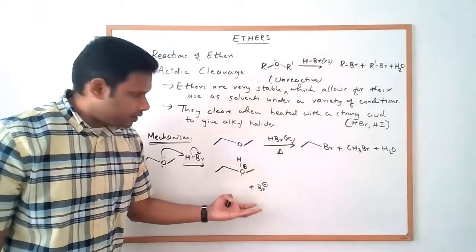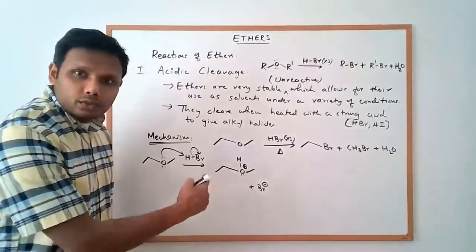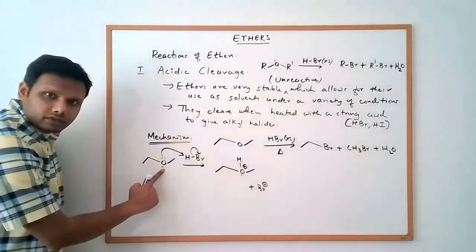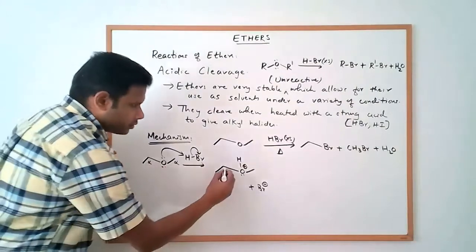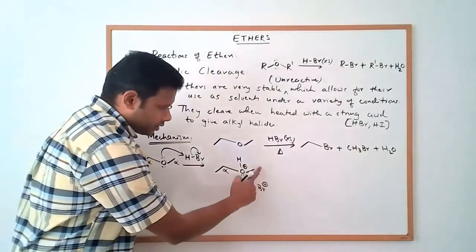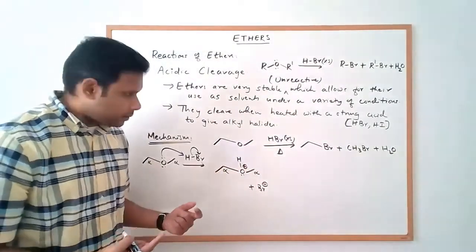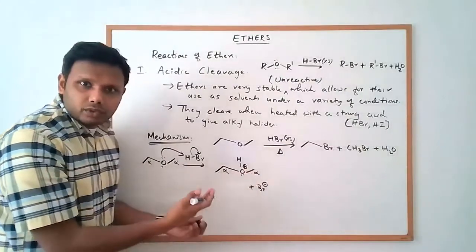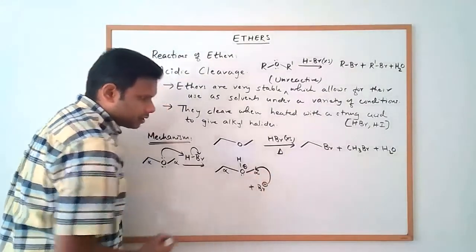This protonated ether now looks like an alcohol, so that oxygen is a good leaving group. The Br minus can go and do an SN2 on one of the alpha carbons — the carbon alpha to the functional group. There are two alpha carbons here: the methyl carbon and the carbon of the ethyl group. Since this is an SN2 backside attack, attack on the methyl group is more favorable, so the bromide goes and attacks that methyl carbon.